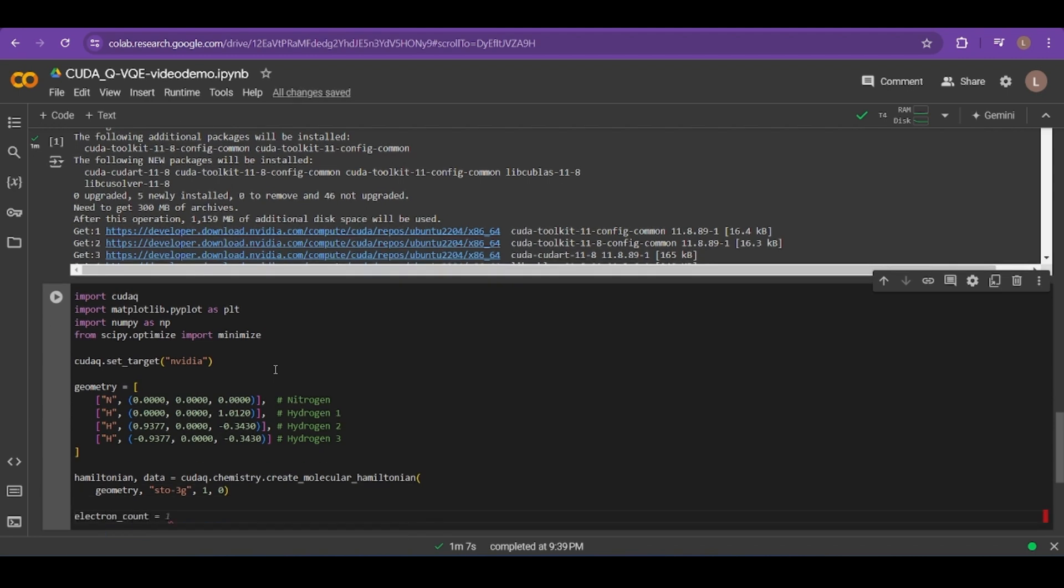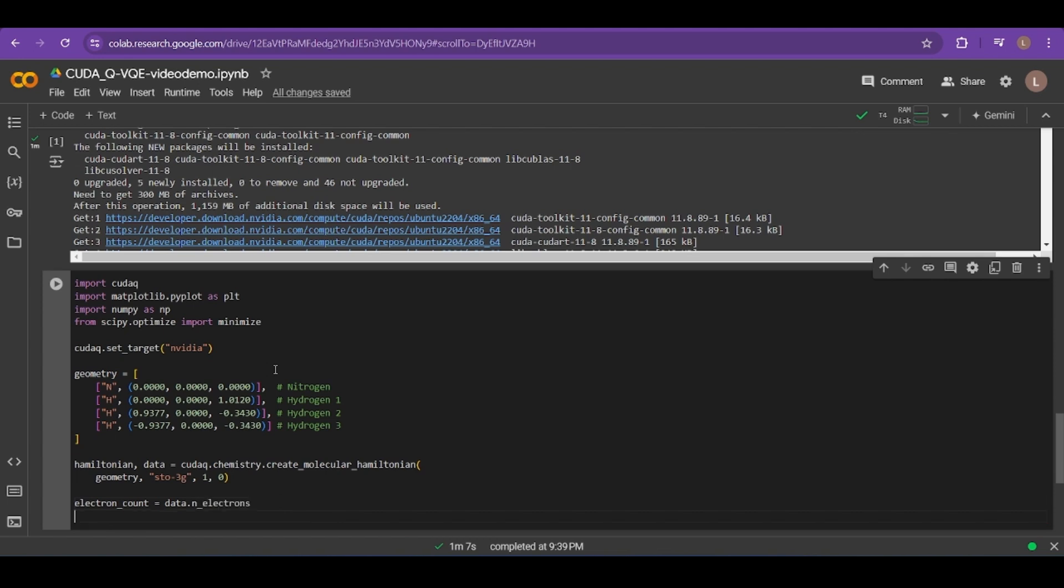Next, we set the number of electrons that we'll use, as well as the number of qubits that we'll use to model those electrons. This basically sets how accurate our ansatz is.